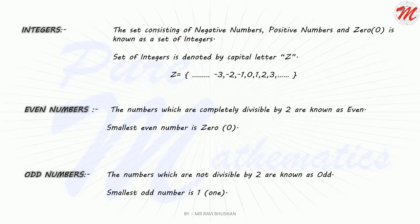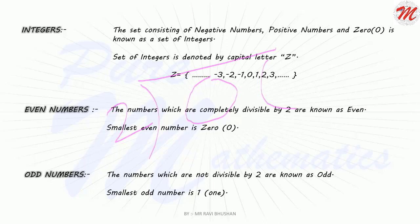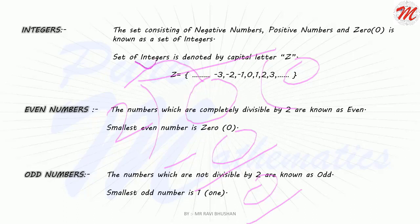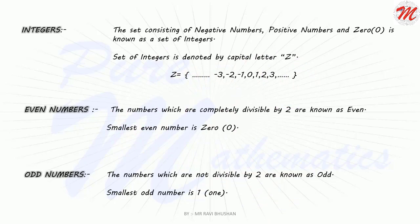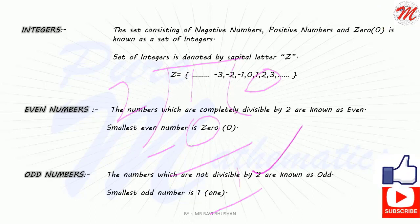Now we will proceed to even numbers and odd numbers. These are very important. A number which is divisible by 2 is known as an even number. Zero is the smallest even number. In the set of whole numbers, a number which is not divisible by 2 is called an odd number. For example, if we take 0 and divide it by 2, we get remainder 0, so 0 is divisible by 2 and is an even number. If we take 1 and divide it by 2, we get remainder 1, so 1 is not divisible by 2 and is an odd number.